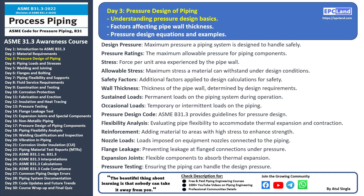ASME B31.3 provides guidelines and codes for pressure design, ensuring that the piping system is designed to meet safety and performance requirements. Flexibility analysis evaluates the pipe's ability to handle thermal expansion and contraction — proper flexibility ensures that the pipe can accommodate temperature changes without straining or causing damage. Reinforcement involves adding extra material to areas with high stress to enhance strength and prevent failure.